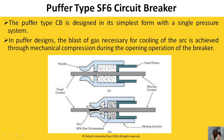In the puffer type, there is a fixed contact and a moving contact, initially in the closed position. After a fault occurs, the relay gives a tripping signal and the circuit breaker contacts open. As the moving contact separates and moves away from the fixed contact, it compresses the gas inside. The pressure reaches 14 kg per centimeter square, and that gas blast is directed onto the arc, causing it to be quenched.